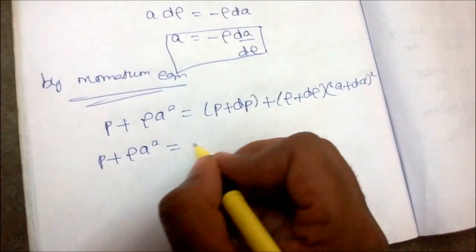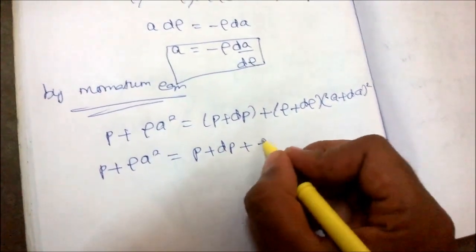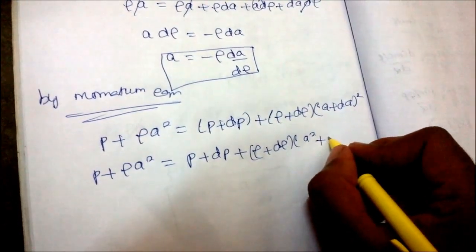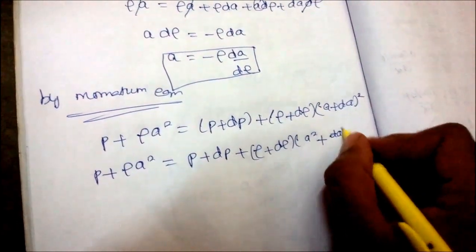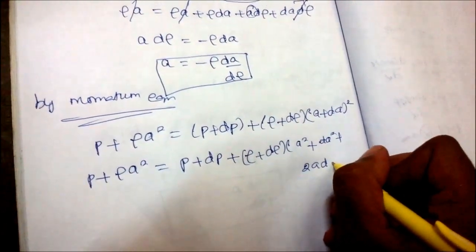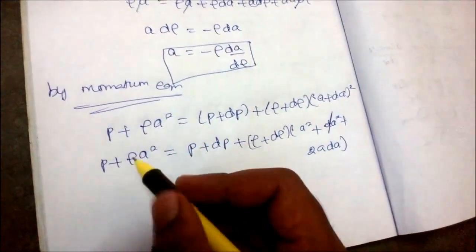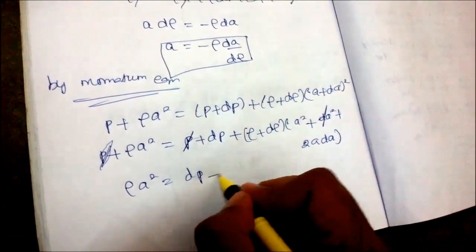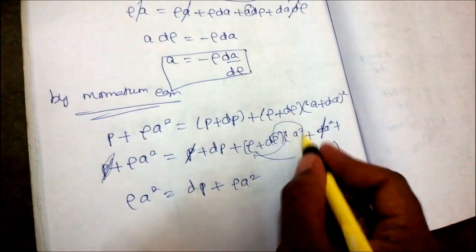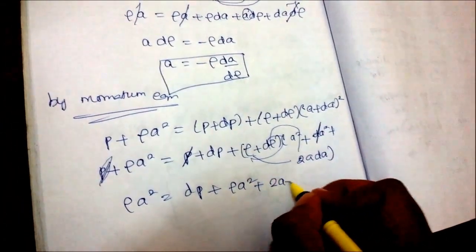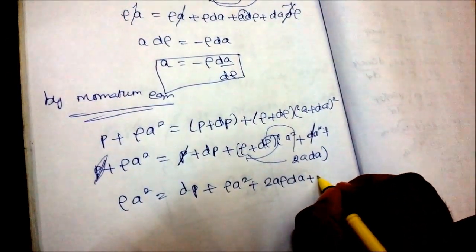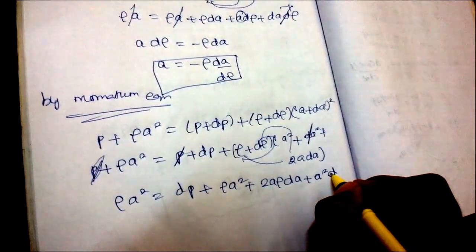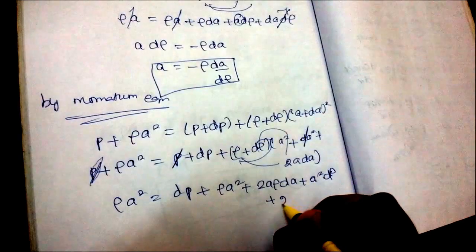Expanding the momentum equation: P + ρA² = P + dP + ρA² + 2AρdA + ρ·dA² + A²·dρ + 2A·dA·dρ. The term dA² is a higher-order term and is canceled. Canceling like terms P and ρA², we get: 0 = dP + 2AρdA + A²·dρ.